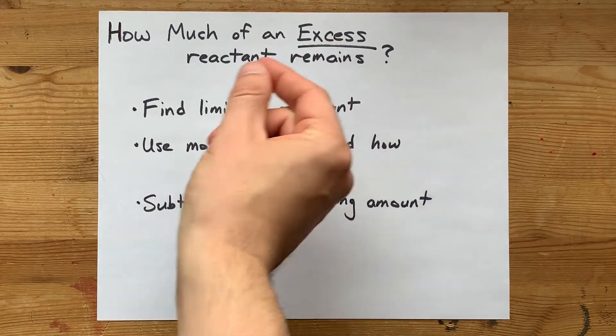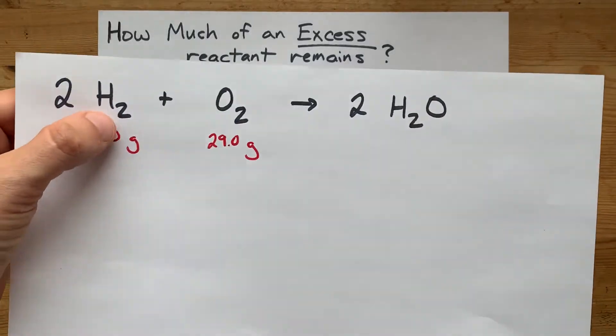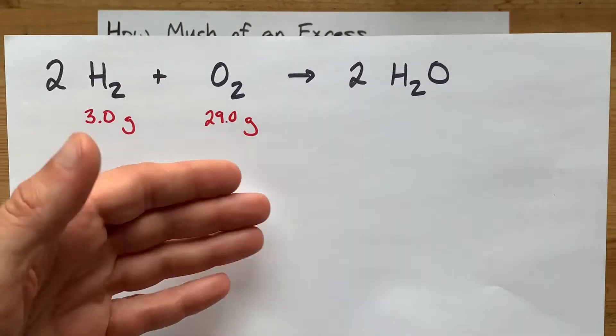How do you find how much of an excess reactant remains? In this example, we have some hydrogen and some oxygen, but one of them is going to run out first.